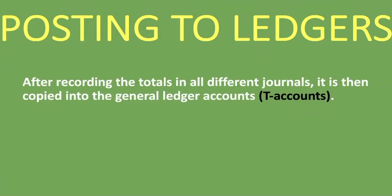Welcome to Countards. In this lesson, we're going to be posting to ledgers — taking the amounts from journals and posting them to their specific ledgers. After recording the totals in all different journals, they are copied into the general ledger accounts, which are the T accounts. We'll go through various general ledger accounts and show how transactions are recorded, closed off, and balanced.